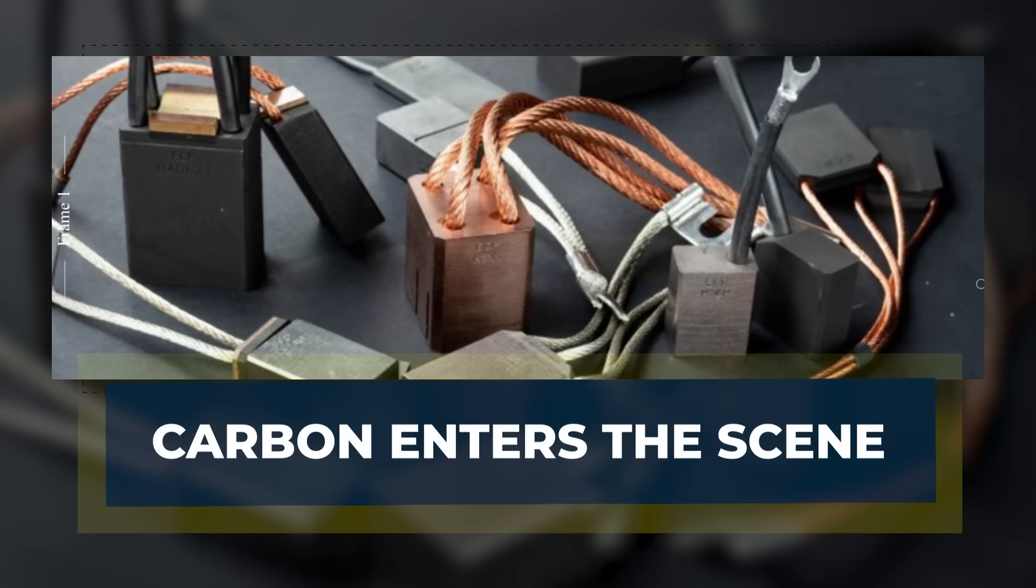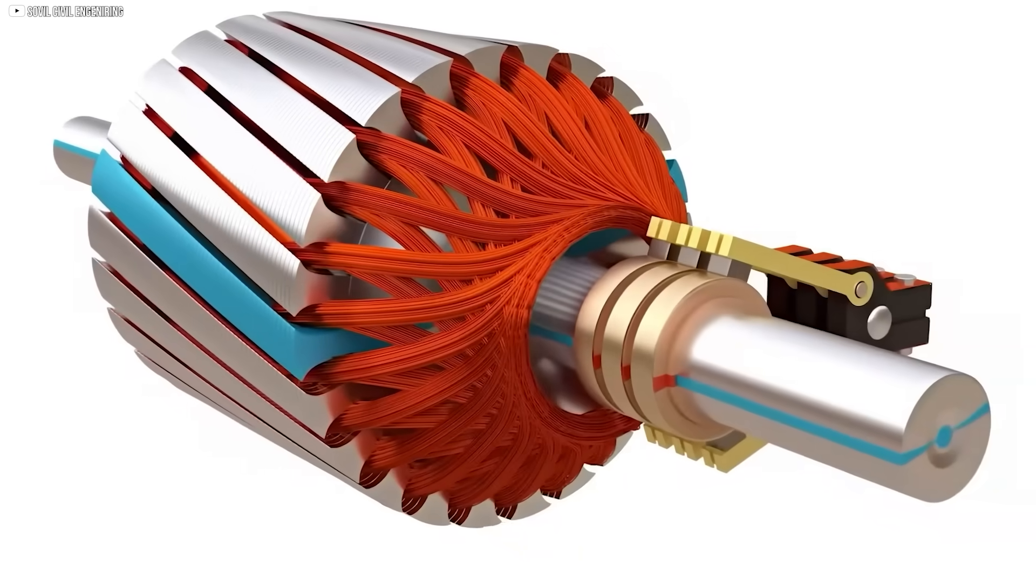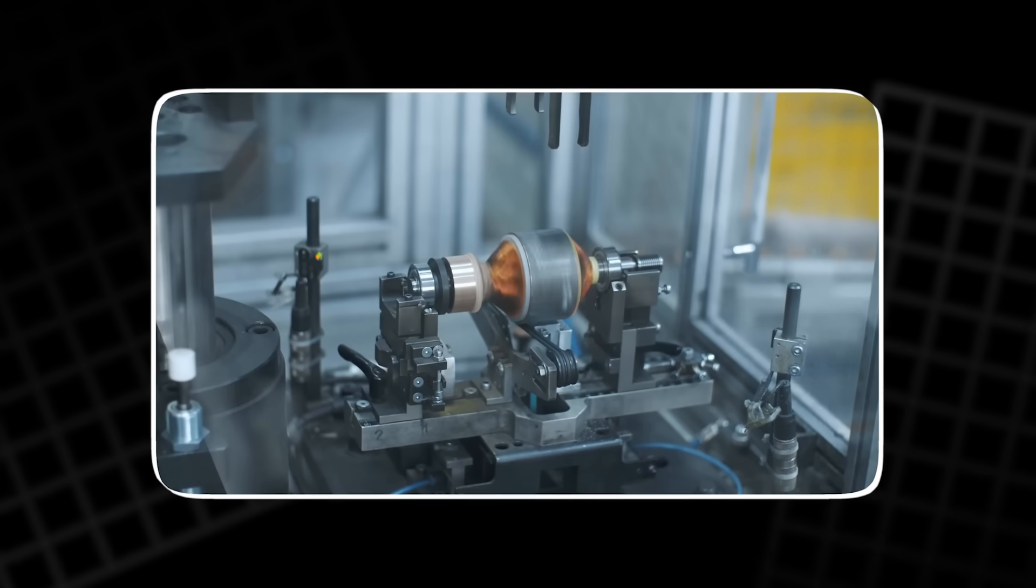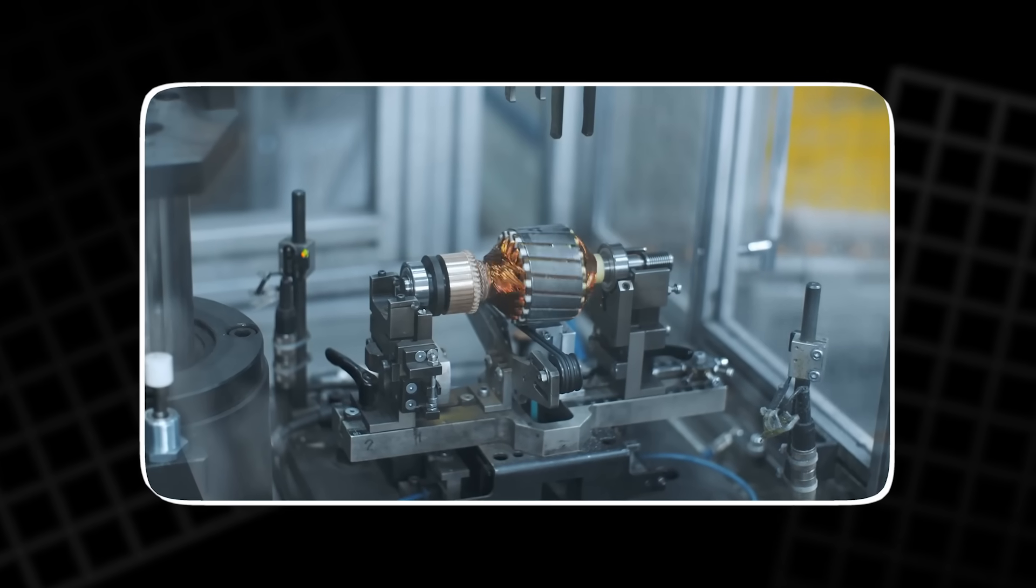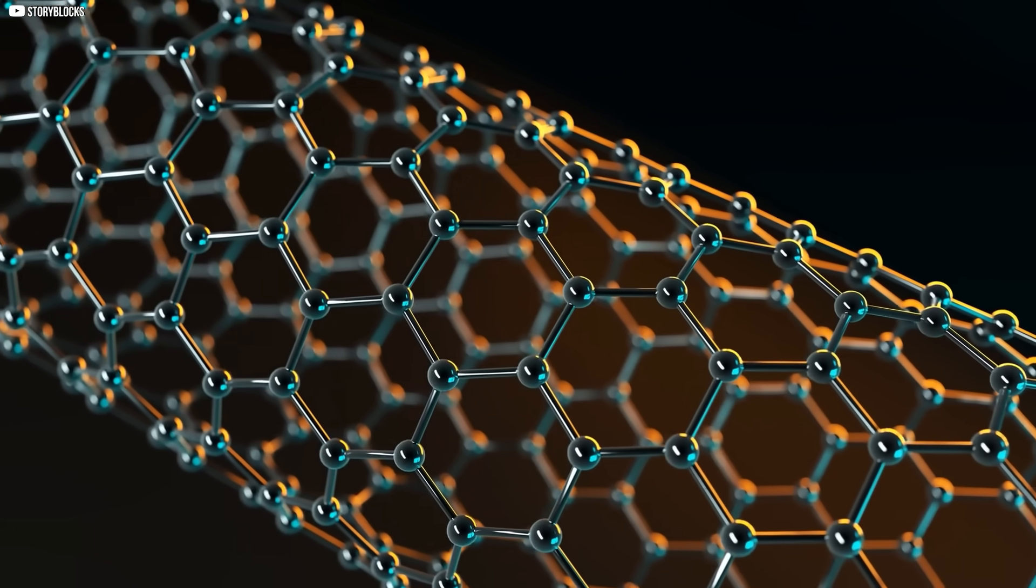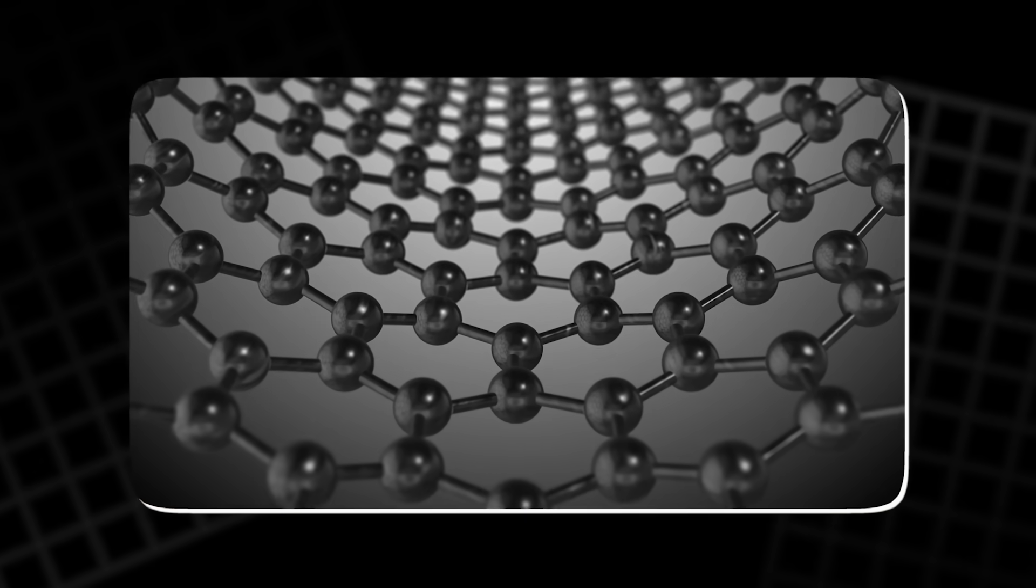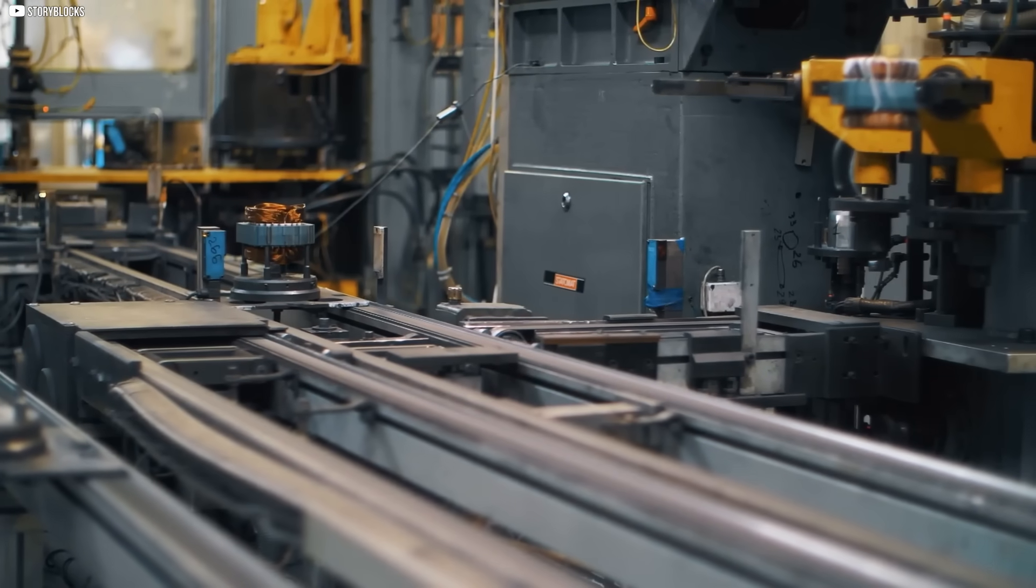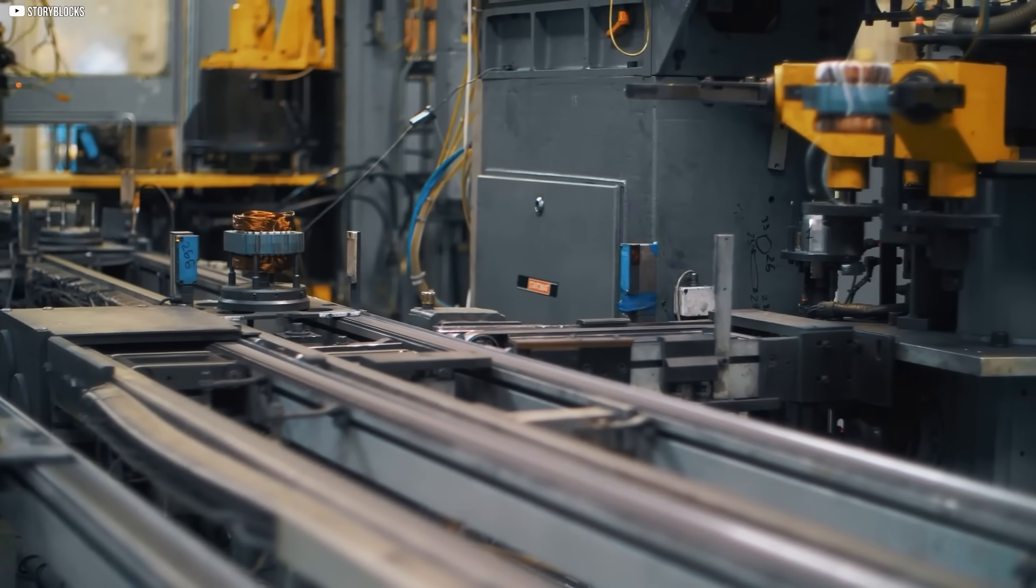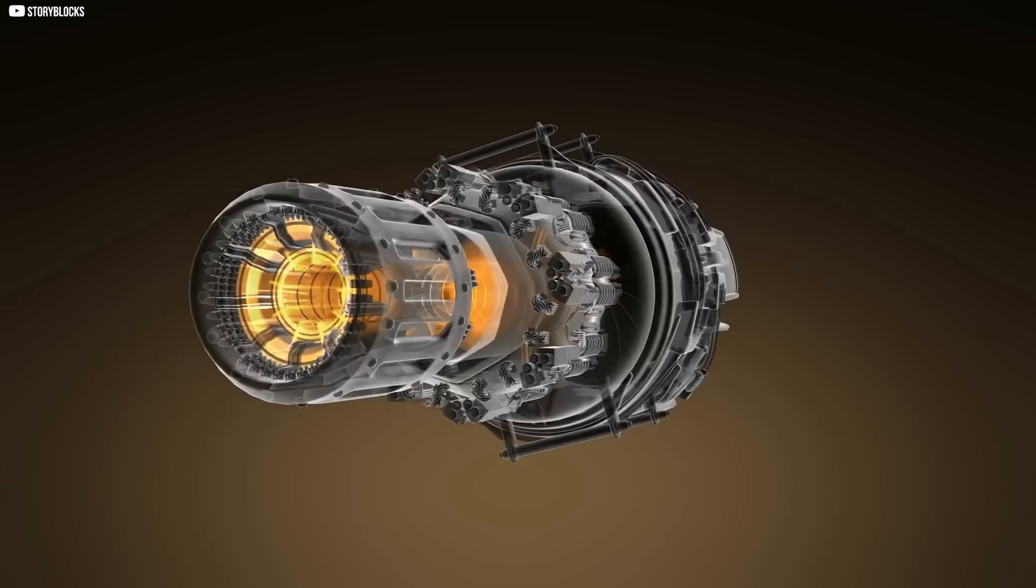Carbon enters the scene. That something else is carbon. Not in the form of graphite or soot, but as something far more advanced - carbon nanotubes. These are cylindrical molecules made of carbon atoms arranged in a hexagonal pattern, like rolled-up sheets of graphene. They're thinner than a strand of DNA and stronger than steel. And when arranged precisely, they can carry electricity almost as well as copper.